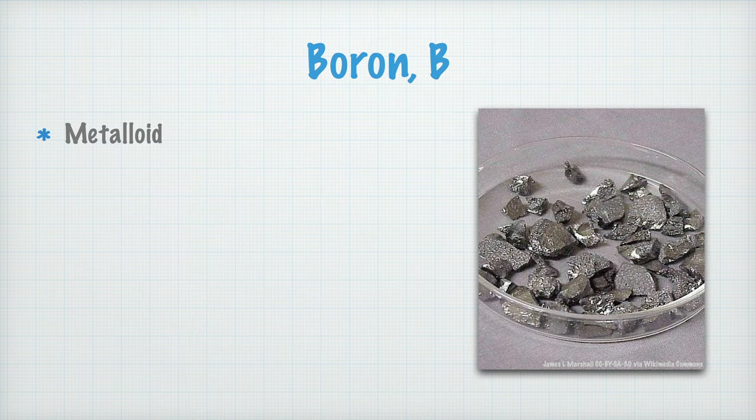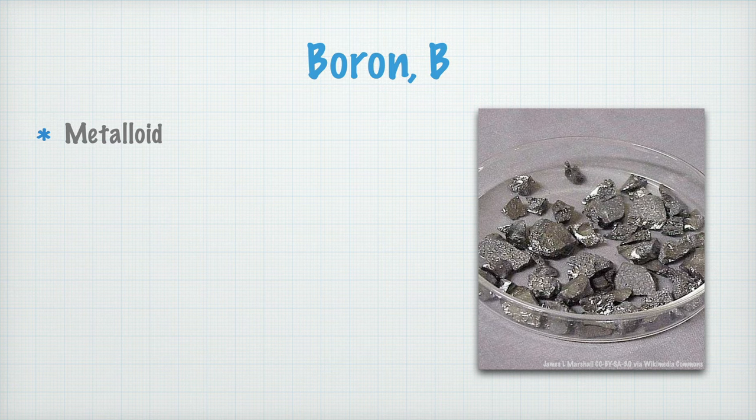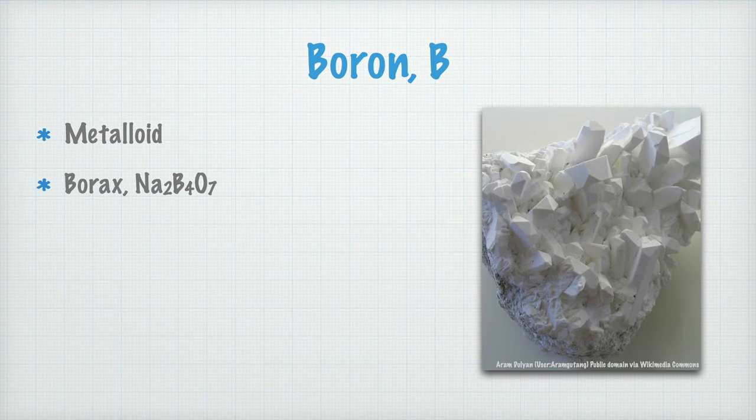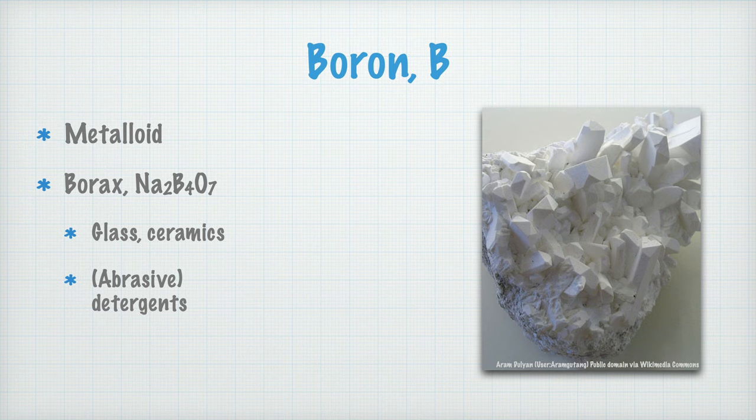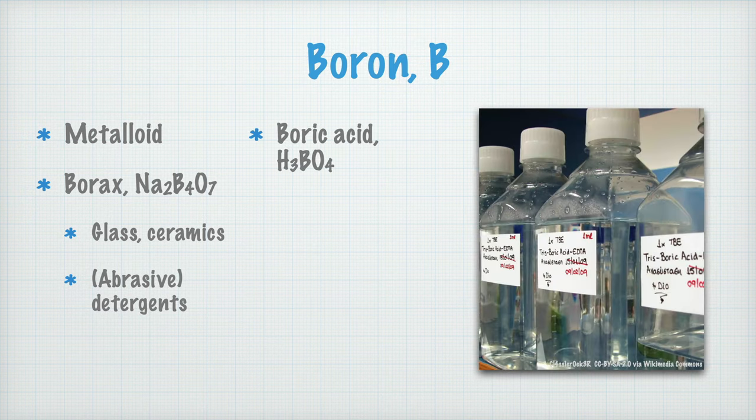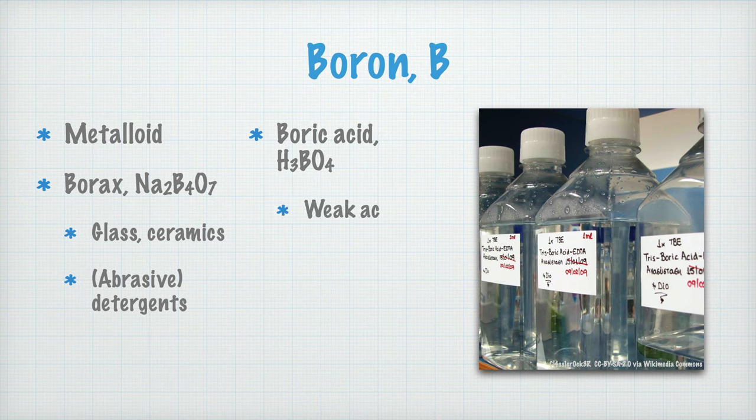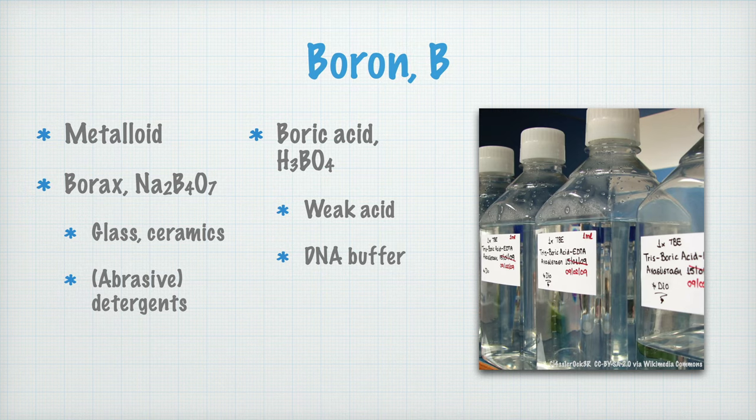Now I want you to learn something about the element boron. It's a metalloid which looks like this. It can be found in a mineral called borax, with chemical formula Na2B4O7. Borax is used when making glass, ceramics and porcelain, and also as part of some abrasive detergents. Borax is also used to make boric acid, H3BO3, a weak acid that often is used in buffers when working with DNA. Boric acid is also used in some flame retardants.